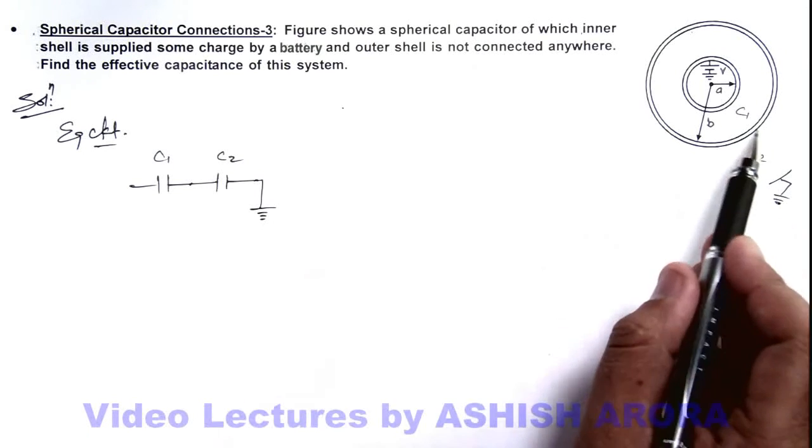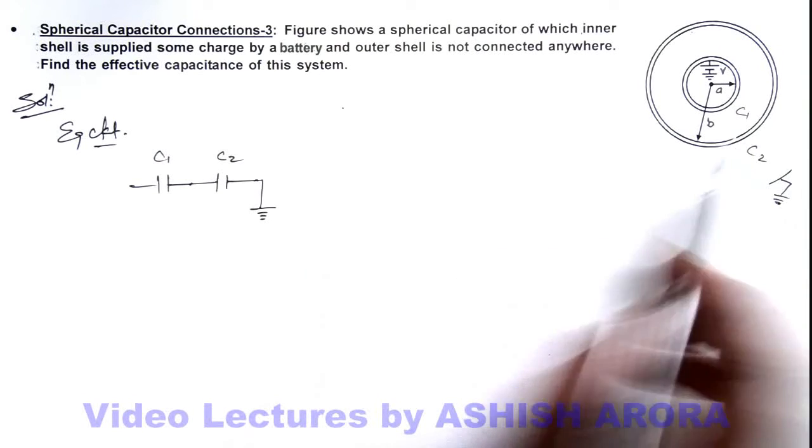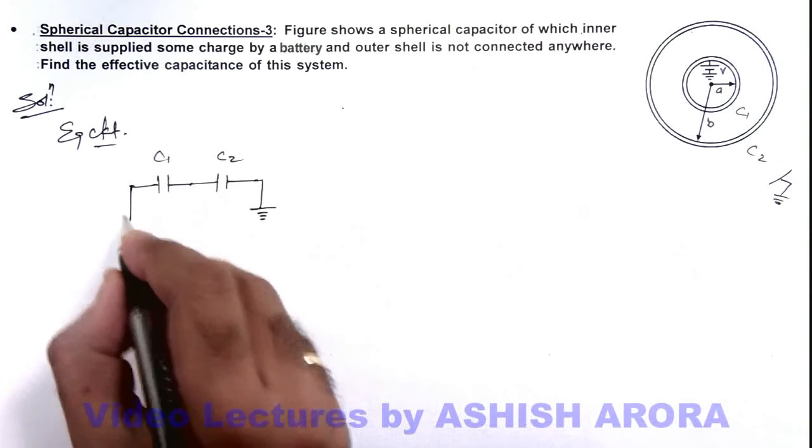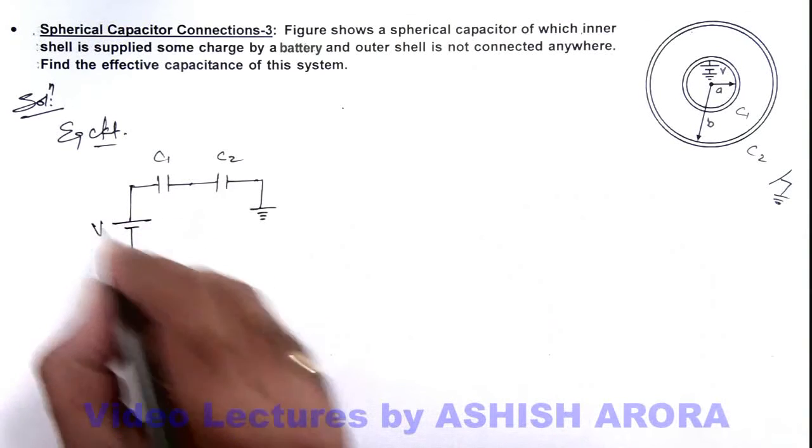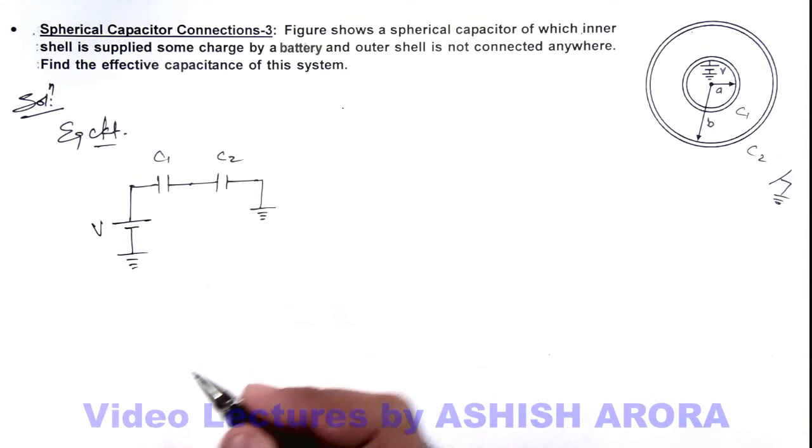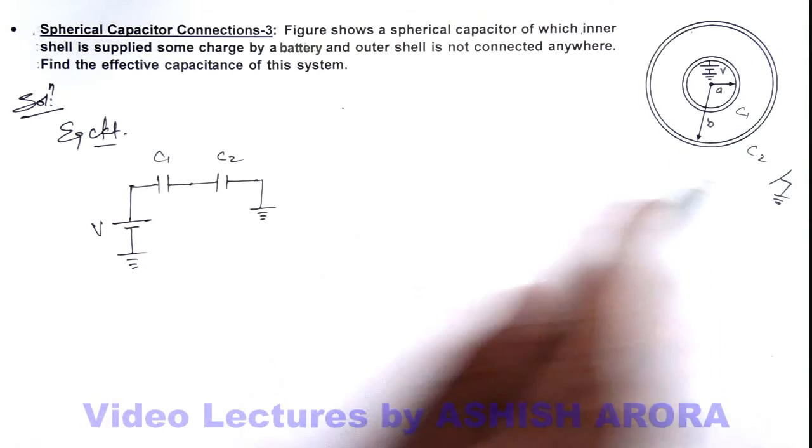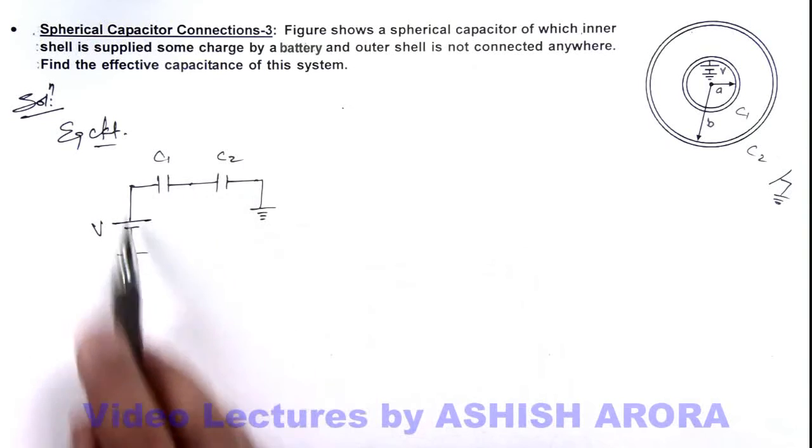Because this shell is not connected anywhere and on the inner plate of this capacitor C1 a battery is connected which is of voltage V, and one side of which is grounded. Here you can see we can consider C1 and C2 to be in series combination connected across the battery.